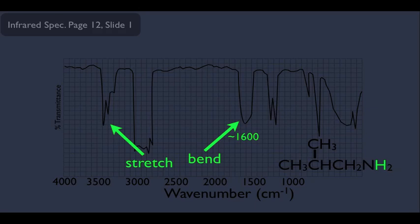So if we suspect we have an amine, we should look in both of those regions. Also, CH bonds have bending absorption peaks that appear at around the 1400 mark. Those peaks are attributable to the C–H bonds connected to the hydrogens in the molecule.